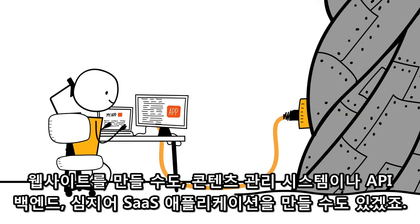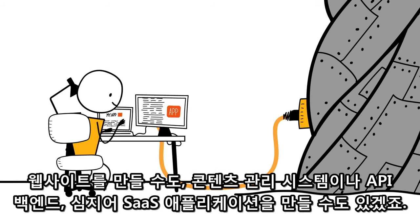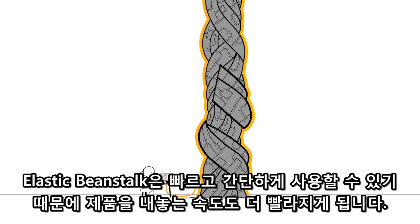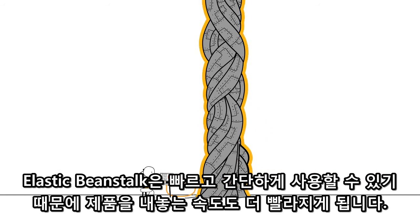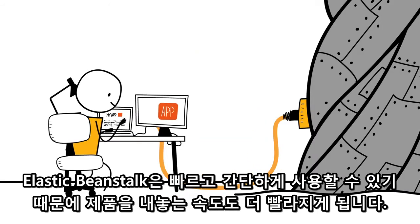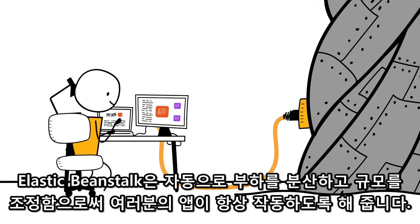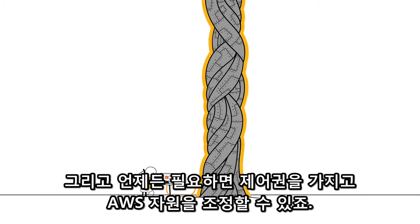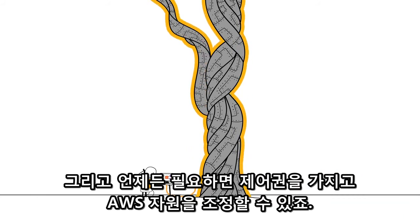Elastic Beanstalk lets you focus on building great web or mobile apps for your users without spending a lot of time managing and configuring infrastructure. You can build things like websites, content management systems, API backends, and even SaaS applications. Elastic Beanstalk can help get you to market faster, automatically load balances and manages scale helping to make sure your app is always available, and lets you tweak any resource you want when you need to, giving you complete control under the hood.